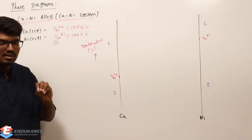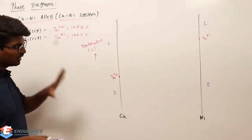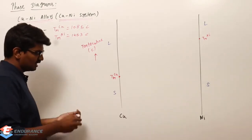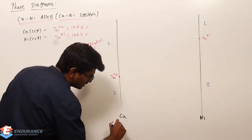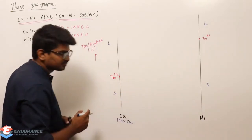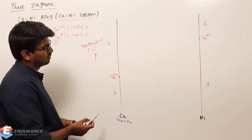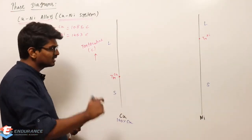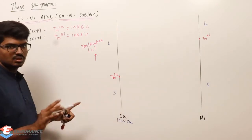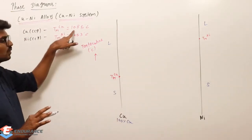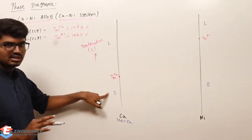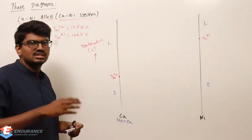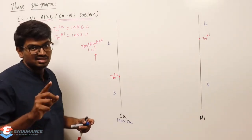Pure copper's melting point is 1085°C. I am plotting that — taking 100% copper. If I take 100% copper and keep on increasing temperature, until it reaches its melting point it will remain as a solid. Until it reaches 1085°C it will remain as a solid. Once it reaches melting point, the solid will start converting into liquid — a phase change process happens. Understand this carefully: it's a pure metal, not an alloy.